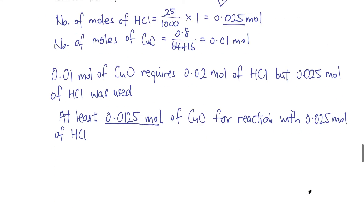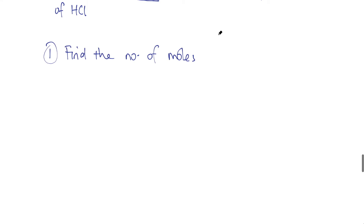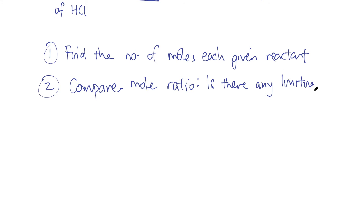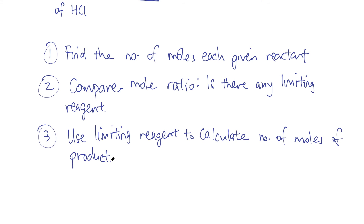Those are the different kinds of questions you can encounter for limiting reactants — but the approaches are always the same. Quick summary: number one, find the number of moles of each given reactant. Then compare the ratio to determine if there is a limiting reagent. Lastly, use the limiting reagent to calculate the number of moles of product. Hopefully this video is helpful and you should be able to do any limiting reactant question if you follow these steps. Thanks for watching.